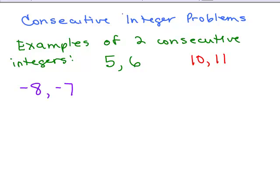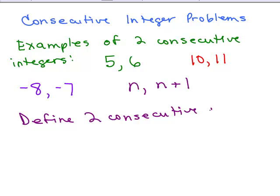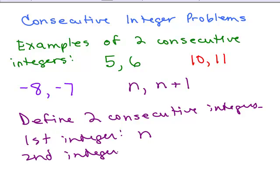Now instead of a specific integer that you know, you're going to have to use variables. You don't know what the first one is. But let's say the first one is n. What would be the next integer? We don't know what n stands for. Well, look at what I did on each of these — to get to the second one you add 1. So if the first number is n, the second number would be n plus 1. That's how you define two consecutive integers.